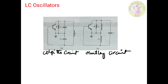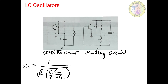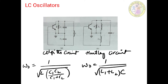In case of the Colpitts oscillator, the frequency of oscillation is given by ω₀ = 1/√(L · C1C2/(C1+C2)). Similarly, in case of the Hartley oscillator, the frequency of oscillation is given by ω₀ = 1/√((L1+L2) · C).